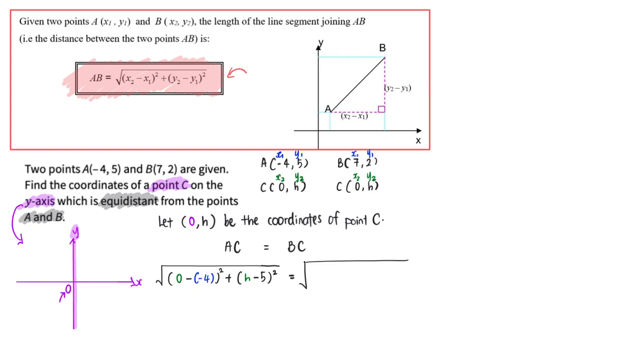And this will be my x1, y1, this will be my x2, y2, and that's where I'm going to apply the formula again. So I will have my 0 minus 7, bracket square, plus my h minus 2, bracket square.